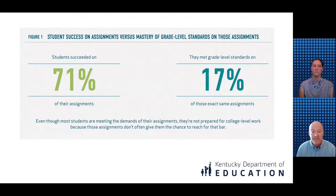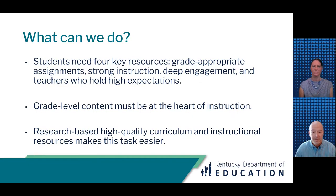Overall outcomes demonstrate that even when students are successful on classroom assignments, if those assignments are not properly aligned to grade-level standards, students are not prepared for the rigors of future college-level coursework. Research also shows students of color and from low-income backgrounds are most impacted and least likely to have access to grade-level instruction. In summary, to ensure equitable opportunity for students, we need grade-appropriate assignments, strong instruction, deep engagement, and teachers who hold high expectations. Research-based, high-quality curriculum and instructional resources do support making equitable opportunity a reality.